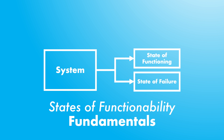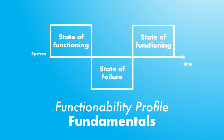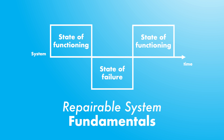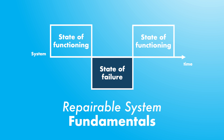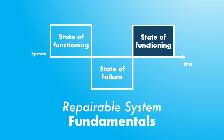Knezevich proposed the functionability profile, which shows the system's evolution through the state of functioning and the state of failure over time. RAM analysis is closely related to this idea, as it requires an understanding of the functionability profile to perform RAM analysis effectively. We show here the functionability profile of a hypothetical repairable system — after a state of functioning, when a failure happens, the system can be put into a state of failure where it is repaired and then put back into operation in another state of functioning.